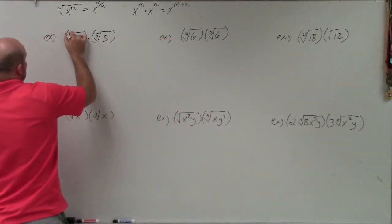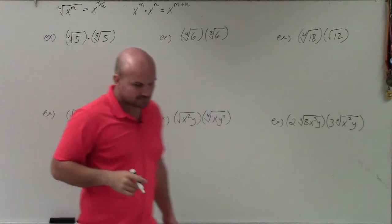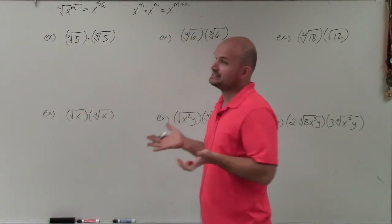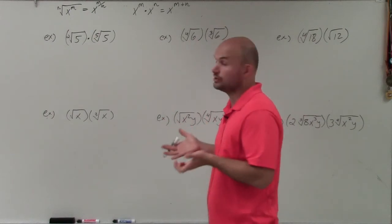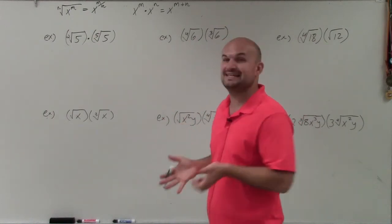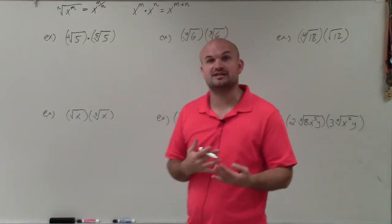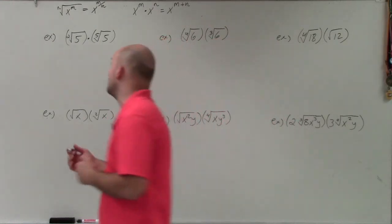If their index is not shown, then we'll assume that the index is going to be 2. So we can't multiply these as they are currently written with radicals because the index is not the same. However, the first step we're going to want to do in all of these videos is to rewrite these using rational powers.